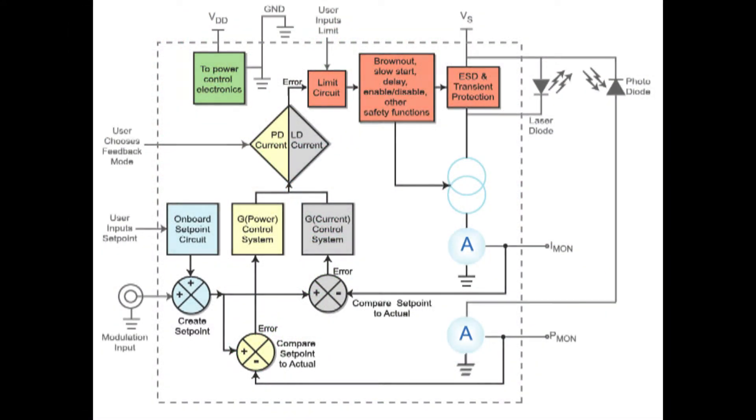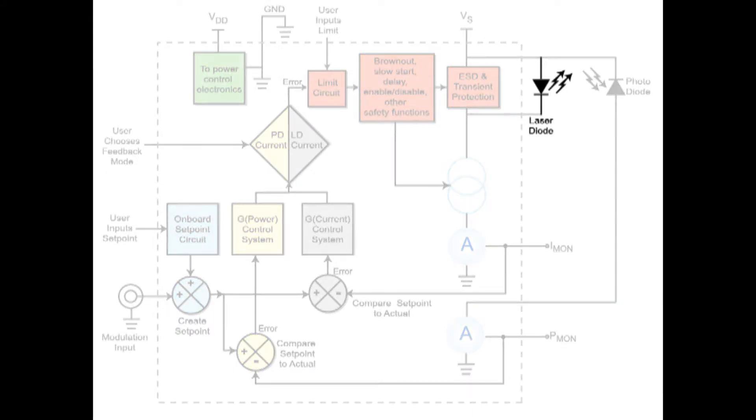The user chooses whether to keep laser diode or photodiode current constant, and at what level. Then, the control system drives current safely to the laser diode.